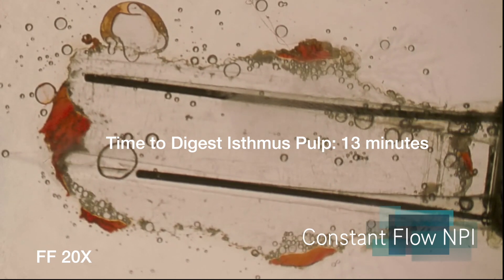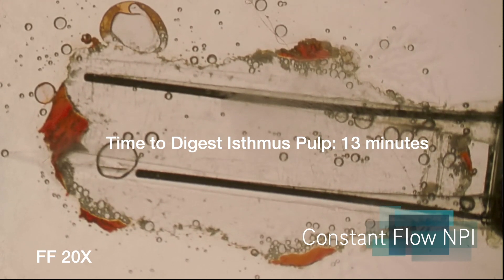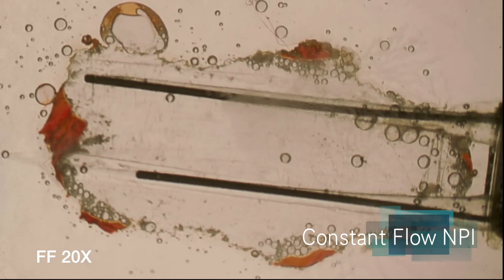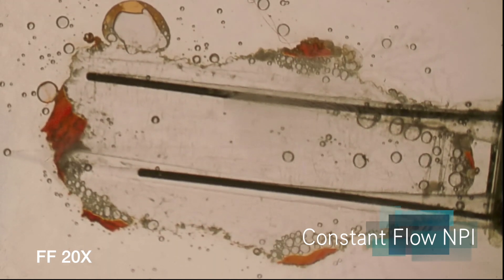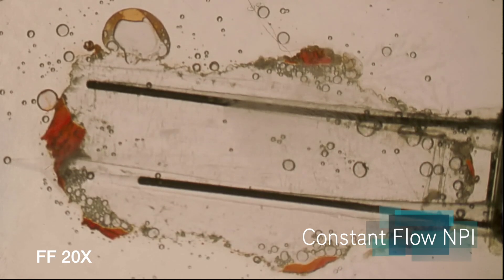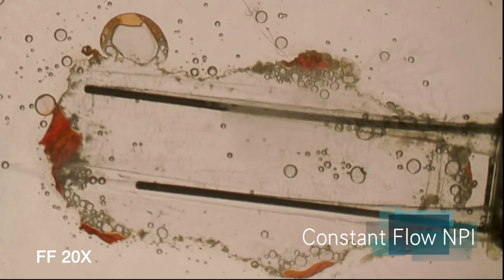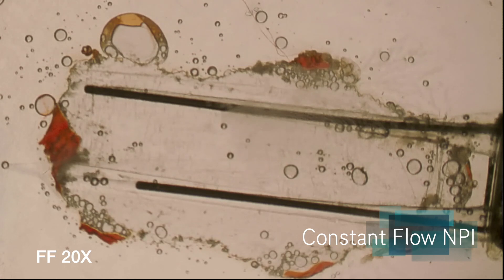Simply because there's fresh solution, slow flow, but fresh solution during this whole period of time. Now look at the negative pressure irrigation actually removing pulp tissue beyond the end of the needles.